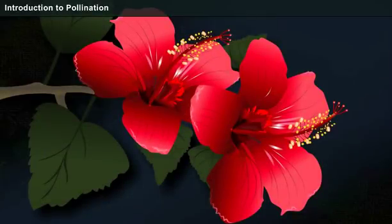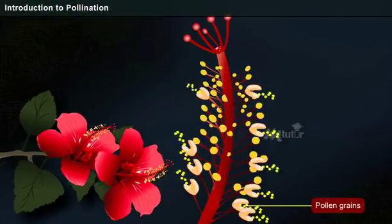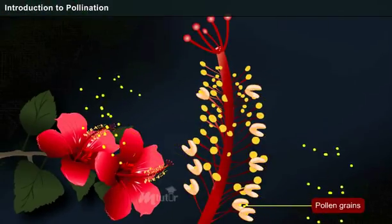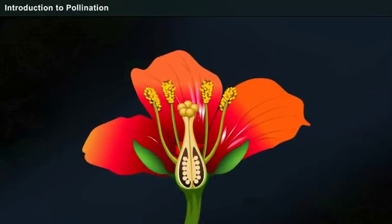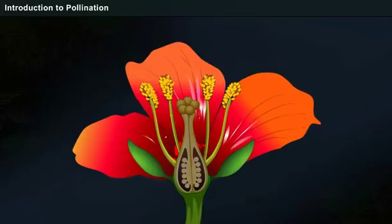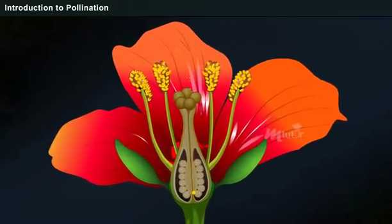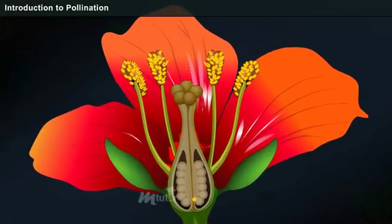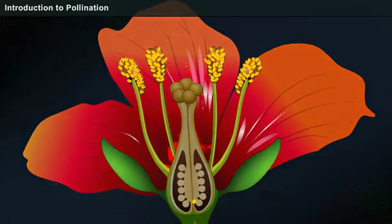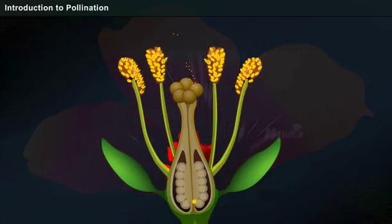In a flower, tiny particles stick to the anther — they are called pollen grains, which are produced by the anther. When the pollen grains land on the stigma, they germinate and grow through the style, where the pollen grains fuse with the ovules of the flower, forming the seed, which later develops into a new plant. The transfer of pollen from the anther to the stigma is called pollination.